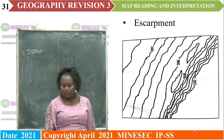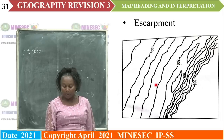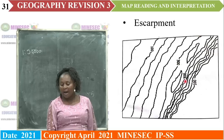An escarpment — this is how it is represented on a topographic map: spaced out contours, then closely packed contours — a steep face facing a lowland, a steep wall.